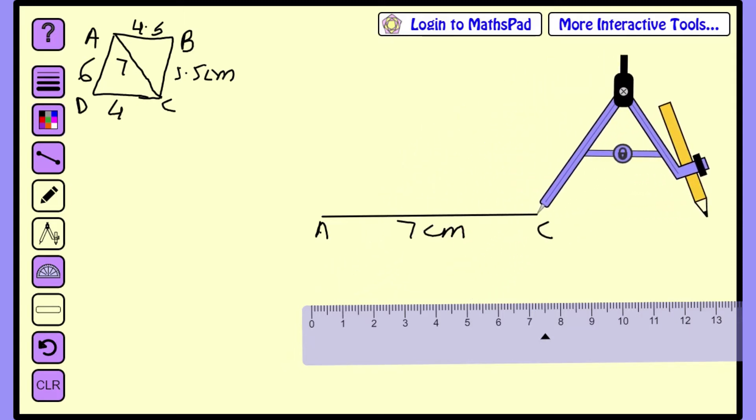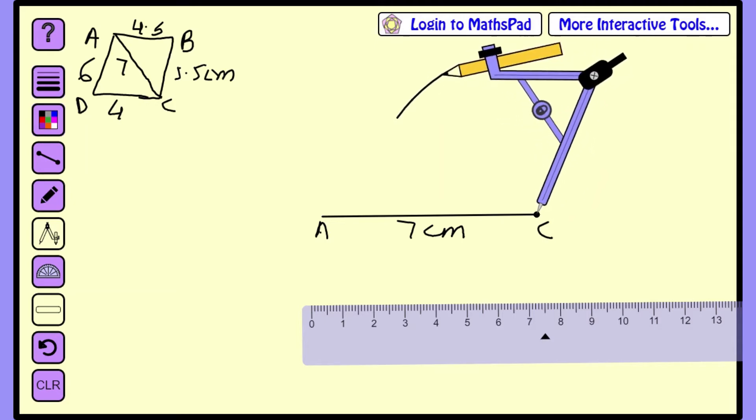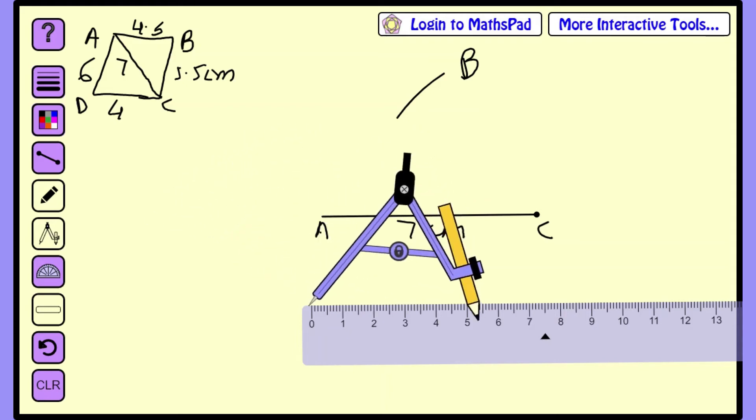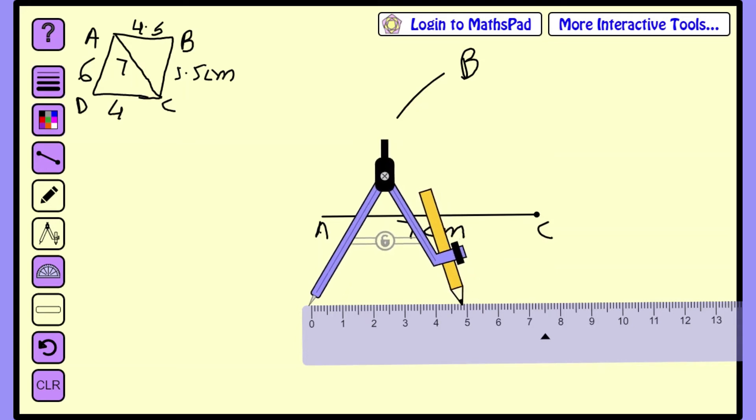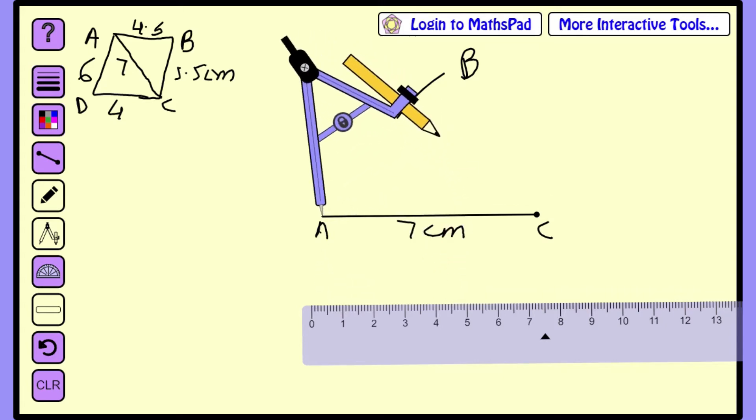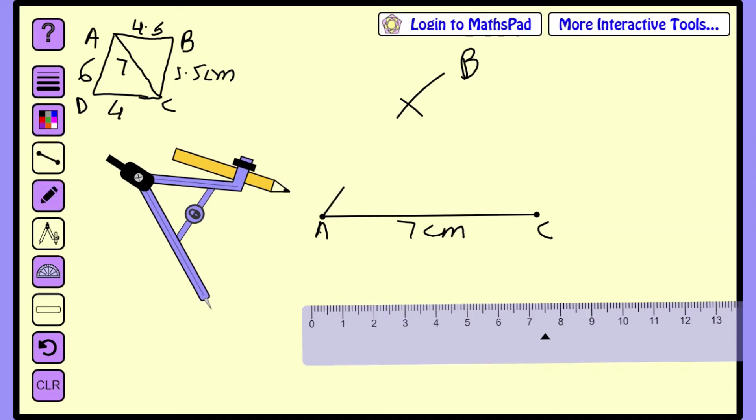Now we have to locate point B, which is at a 5.5 cm distance from C. I will just keep the compass tip at C, at 0 and I have taken 5.5 cm. With C as center, I am drawing an arc. With C as center, what is the length I have taken? 5.5 cm. Now from A to B, it is 4.5 cm. This time, I will set the compass 4.5 cm, keeping the compass tip at 0 and 4.5 cm. Keep this compass at A, this time A as a center, and we are drawing another arc which is cutting the previous arc at point B. We have got our point B.